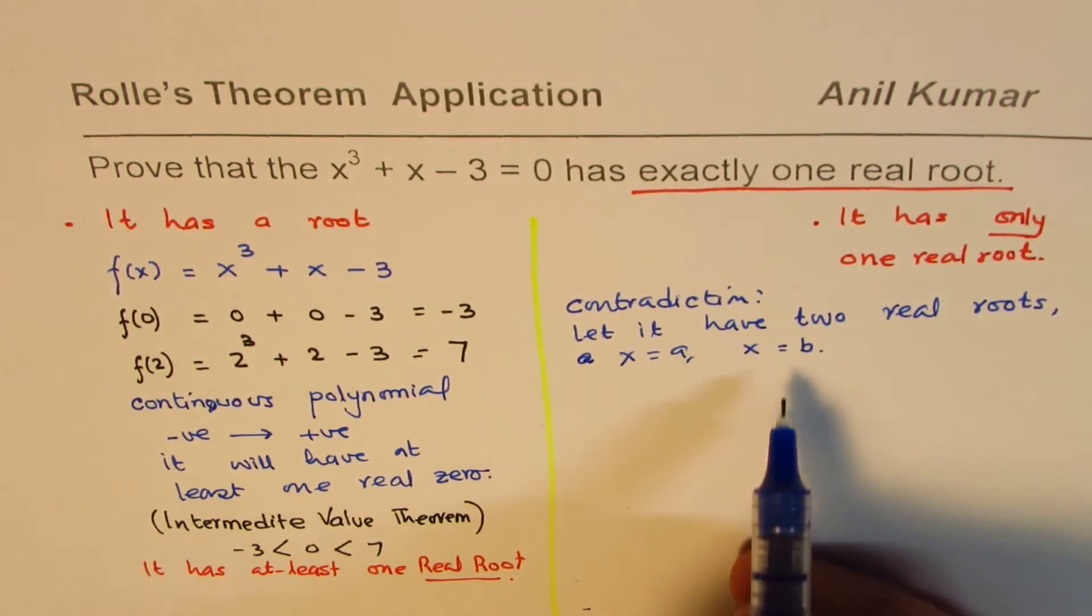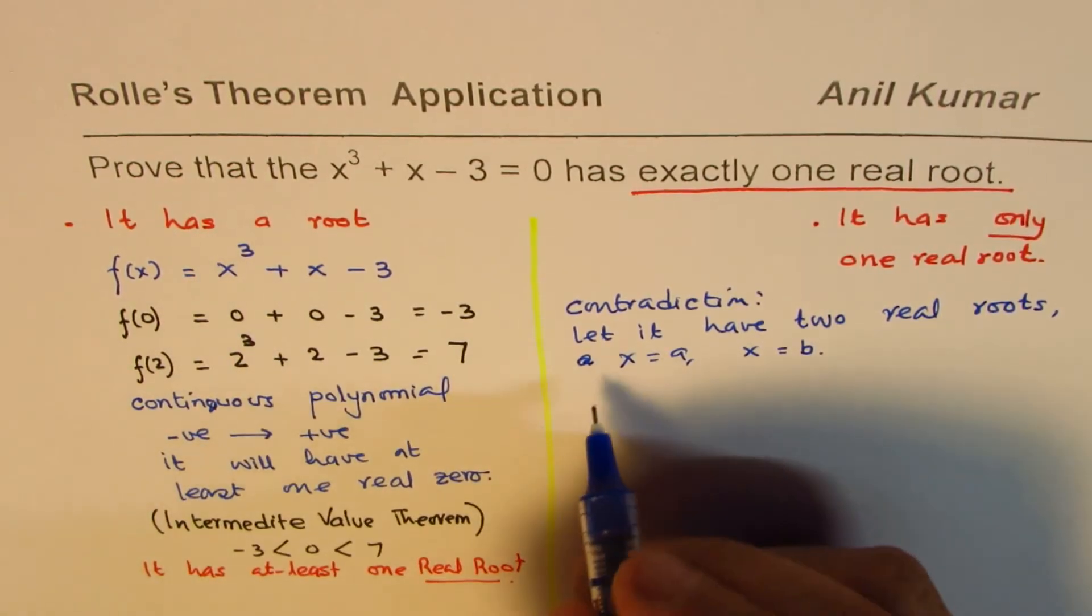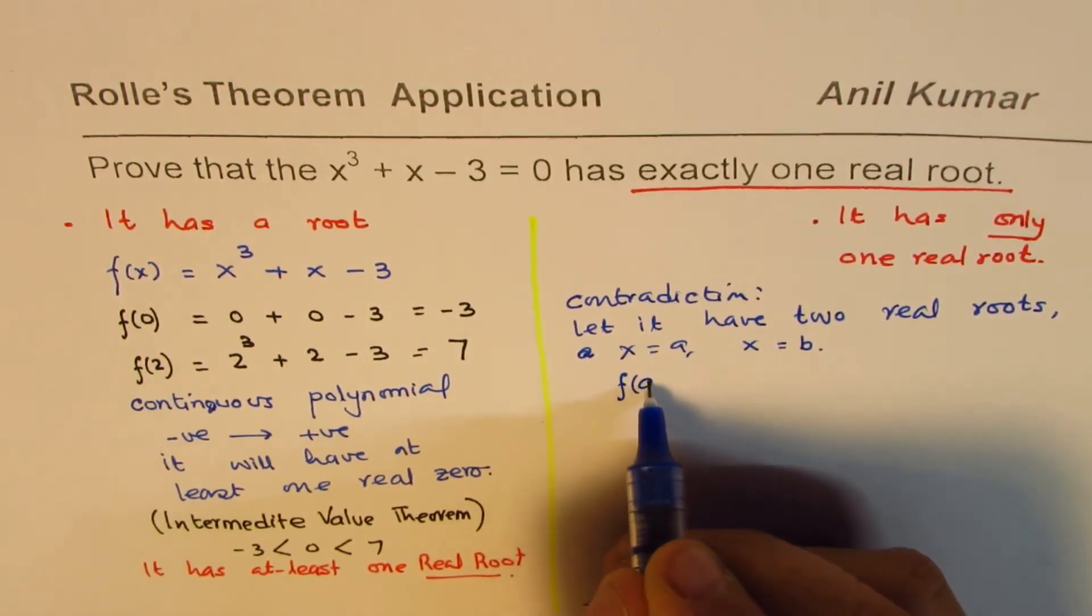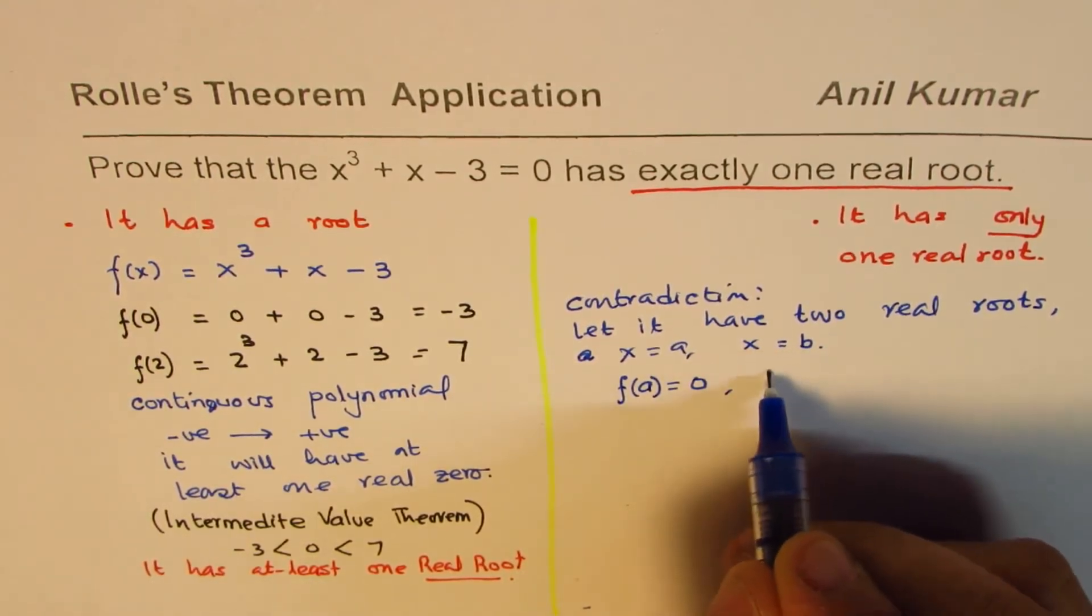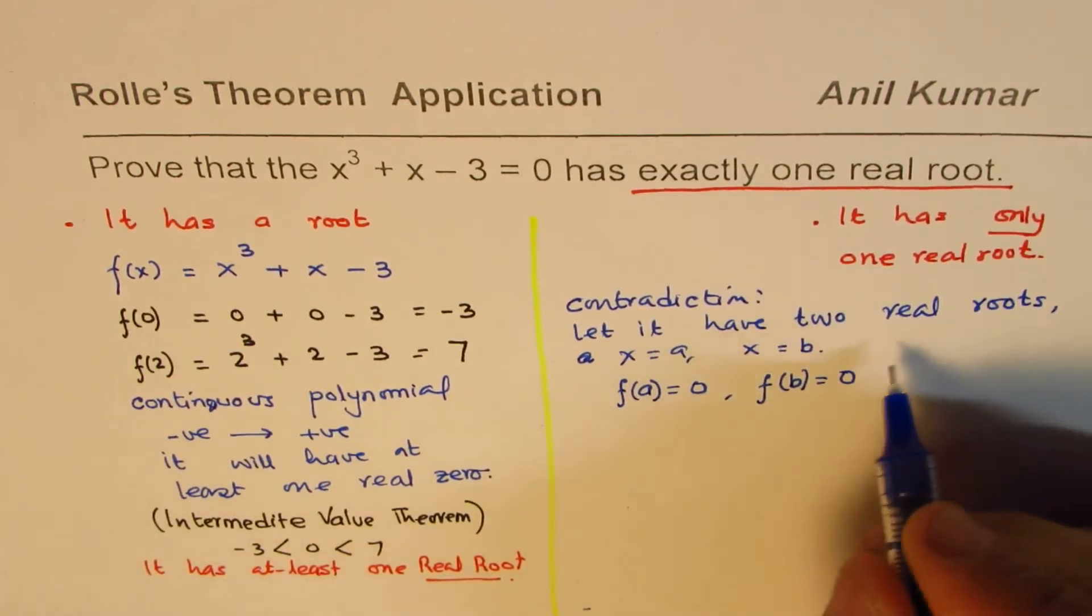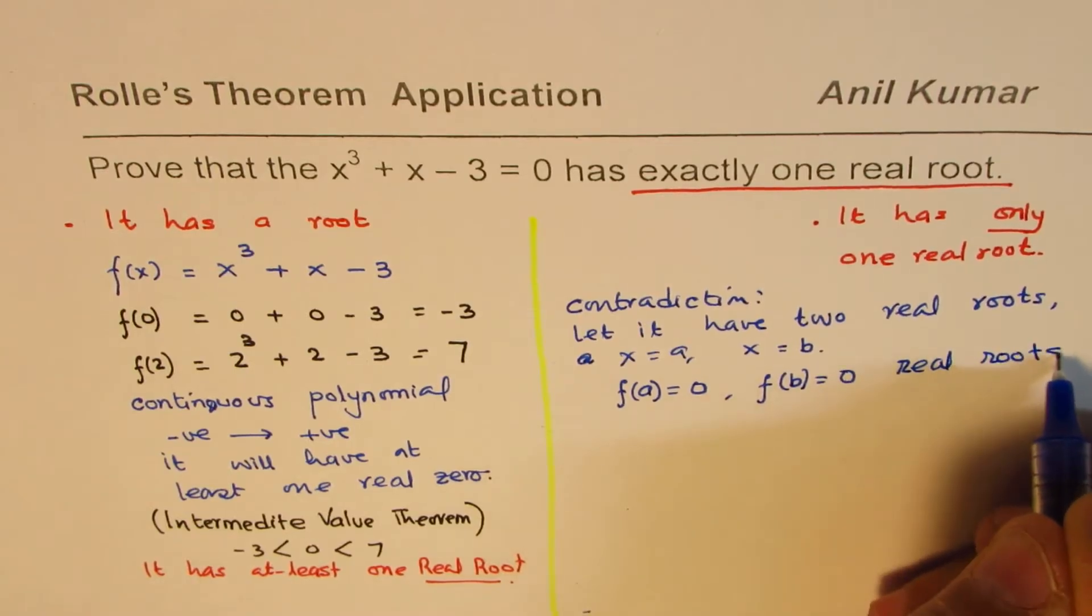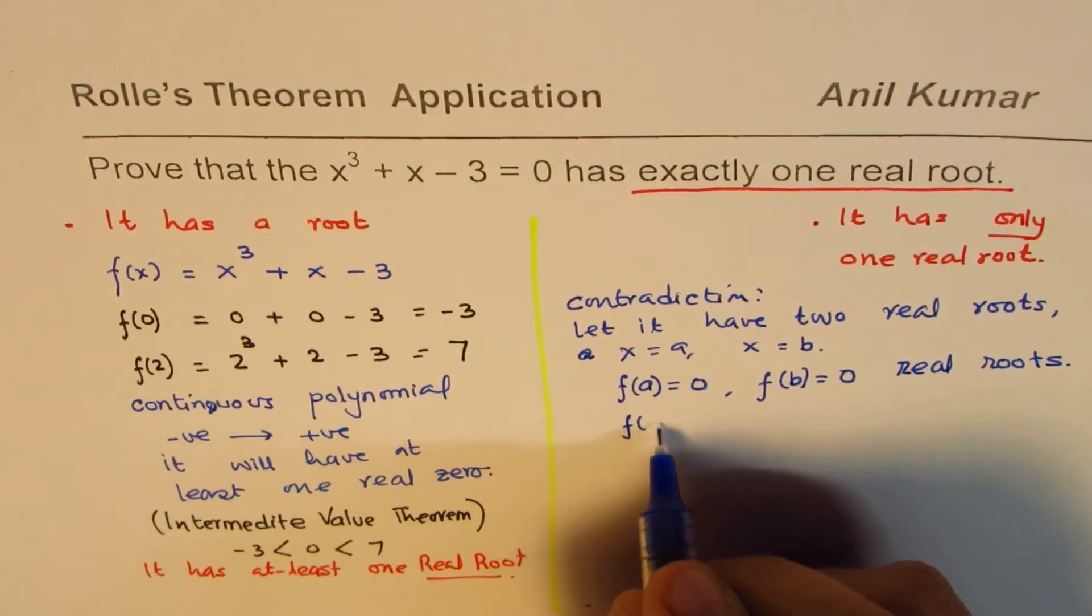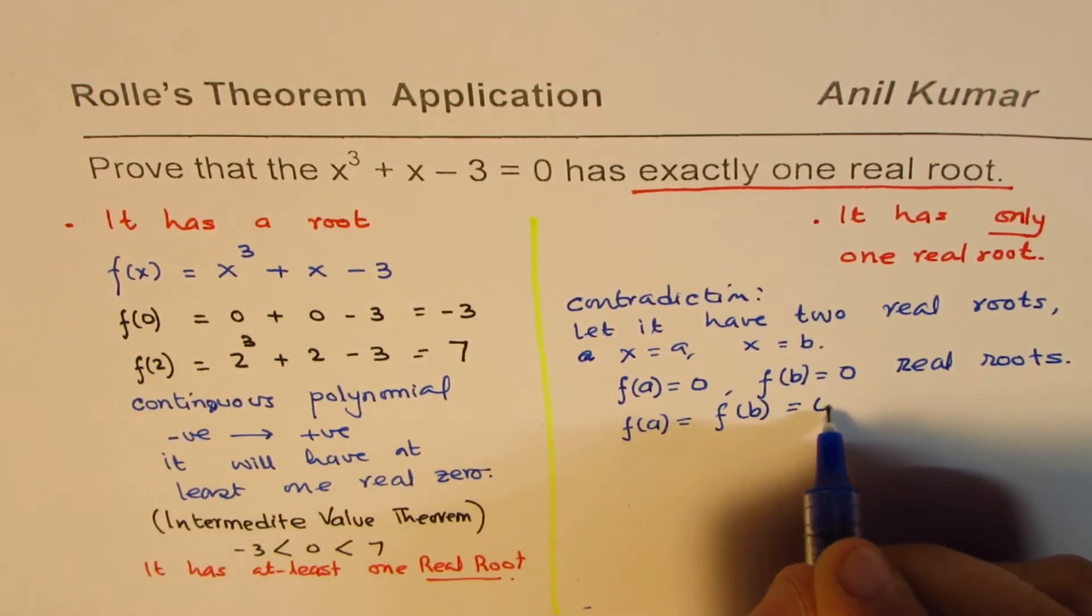So let us assume that it has not one but two, more than one. So let it have two real roots, one at a, the other one at b. We know it is a continuous function and between a and b, we are saying that the value at a will be 0. And since it has a root at b also, then f of b is also 0. Now we have f(a) equals to f(b), and both are equal to 0.